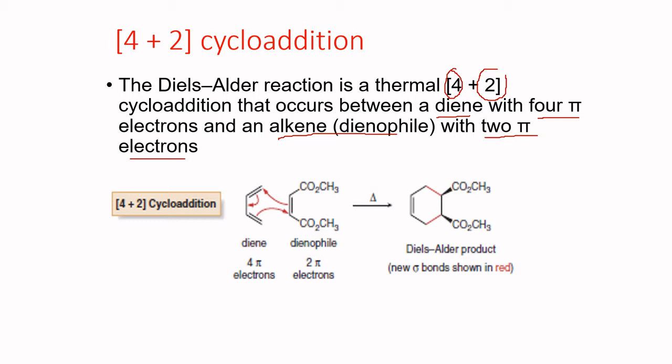In a 4+2 cycloaddition, the first starting material has two pi bonds, giving 4 pi electrons, which interact with the dienophile containing 2 pi electrons. The resulting product will have 2 fewer pi bonds and 2 new sigma bonds. This product is what we call the Diels-Alder product.